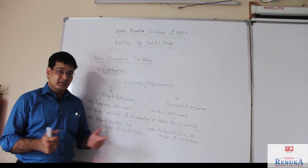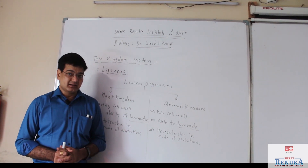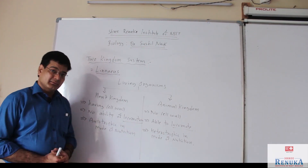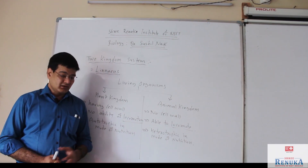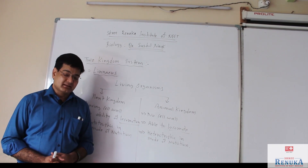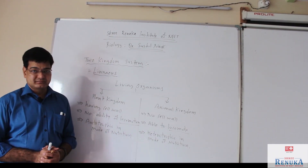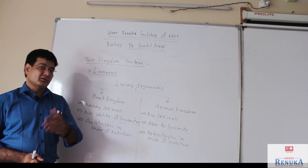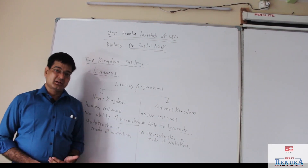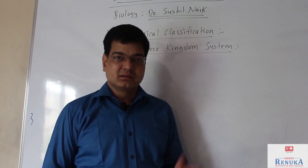There is no information regarding prokaryotic organisms like bacteria and blue-green algae in this system of classification. As well, there was no information on viruses in the two kingdoms system. That is why the two kingdoms system of classification was not accepted in those days.